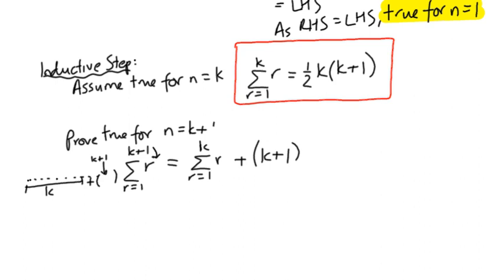Now, the good news is that we actually have confidence that we know what that is, because we've just defined it as a half times k times k plus 1. So here we go. We substitute a half times k times k plus 1, and we're going to add in another k plus 1.